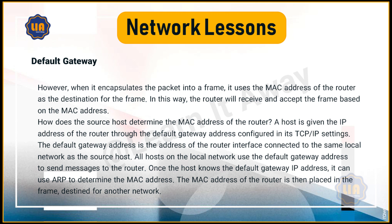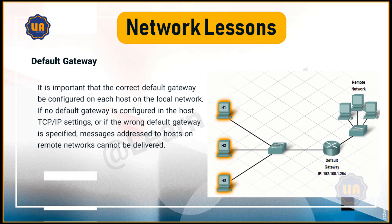Once the host knows the default gateway IP address, it can use ARP to determine the MAC address. The MAC address of the router is then placed in the frame destined for another network. It is important that the correct default gateway be configured on each host on the local network. If no default gateway is configured in the host TCP/IP settings, or if the wrong default gateway is specified, messages addressed to hosts on remote networks cannot be delivered.